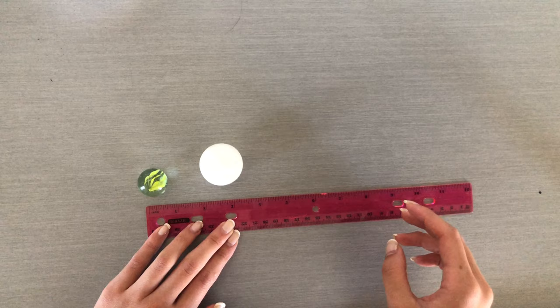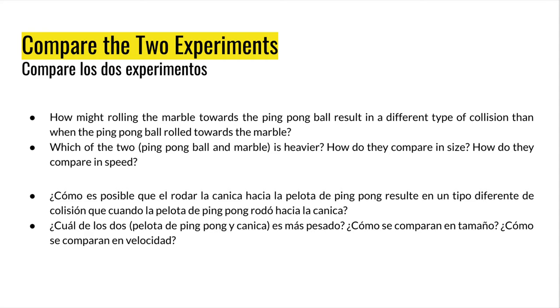Remember to write down your observations in your science journals. Compare the two experiments. How might rolling the marble towards the ping pong ball result in a different type of collision than when the ping pong ball is rolled towards the marble? Which of the two is heavier? How do they compare in size and how do they compare in speed?